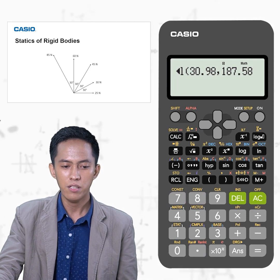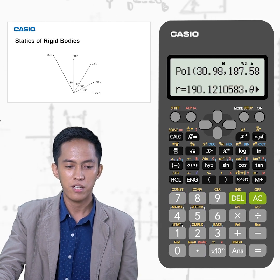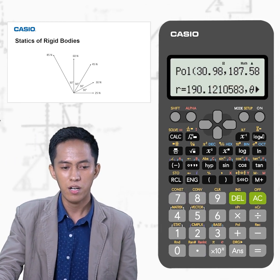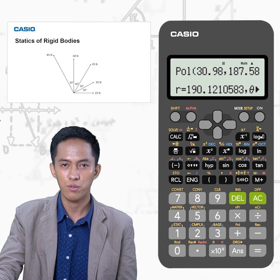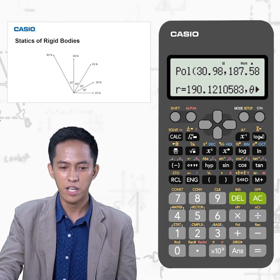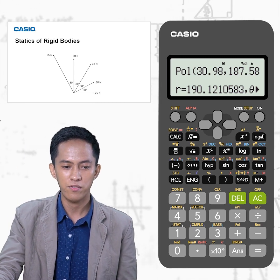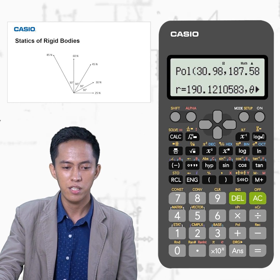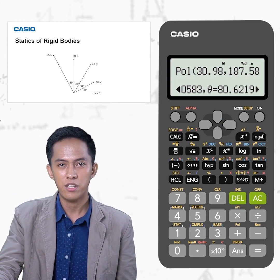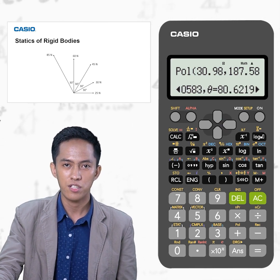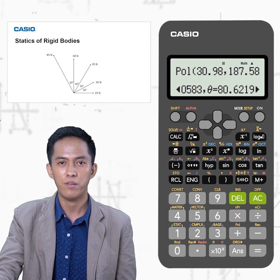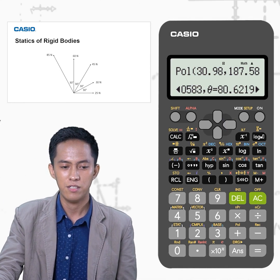Then press Equals. You will get the resultant of these forces. R, the resultant, is 190.12N. This angle is the direction of the resultant force with respect to the positive x-axis.